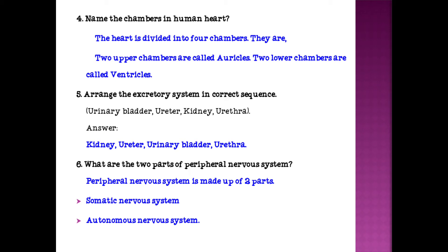The two upper chambers are called auricles and the two lower chambers are called ventricles. Fifth question: Arrange the excretory system in correct sequence. The correct sequence is: kidney, ureter, urinary bladder, urethra.